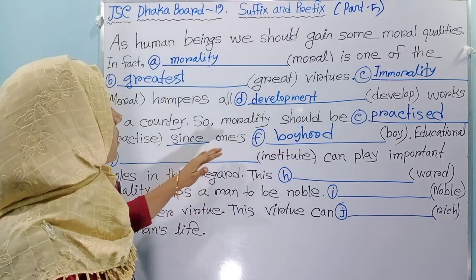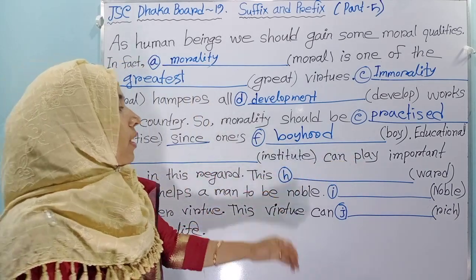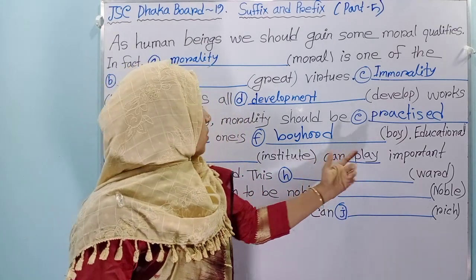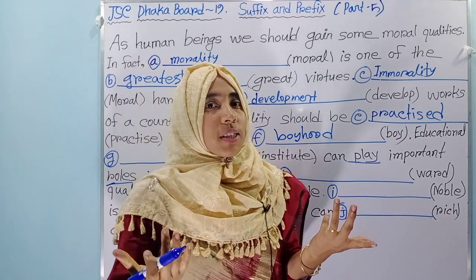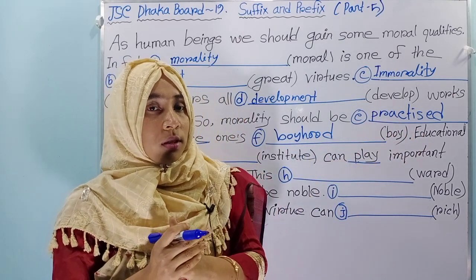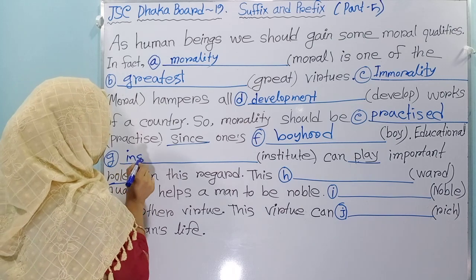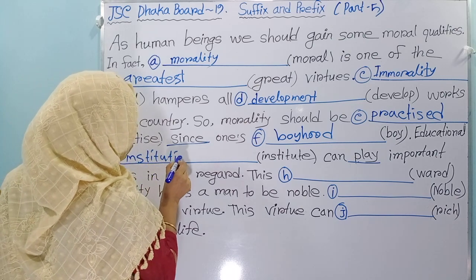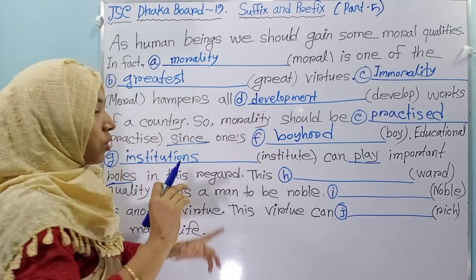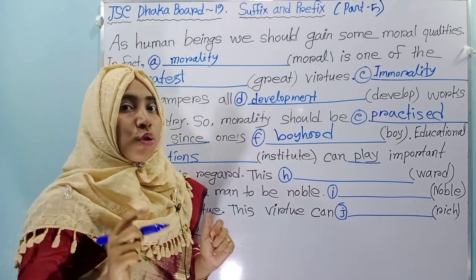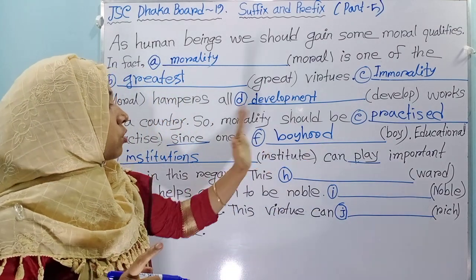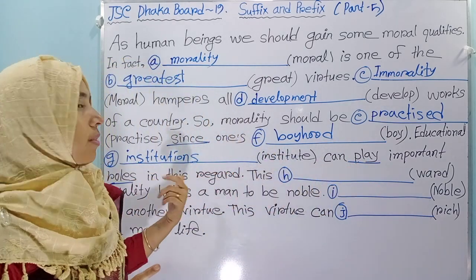Educational institutes can play important roles in this regard. Here you see 'can play' — this play is not like a game, this is about role play. What can role play in this regard? Educational institutions. Here you have to use institutions — not any single institution. So you have to use the plural form: educational institutions can play important roles in this regard.